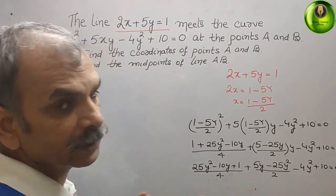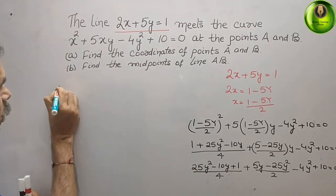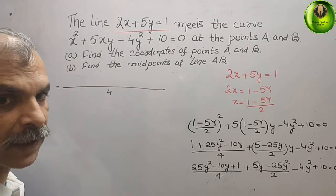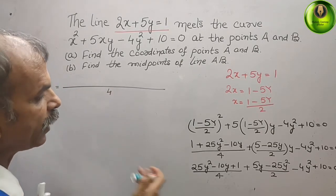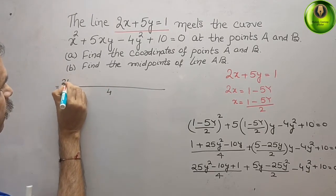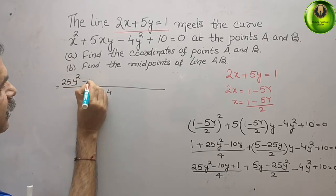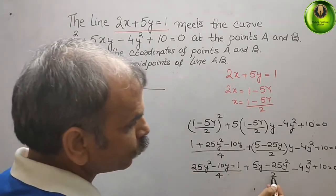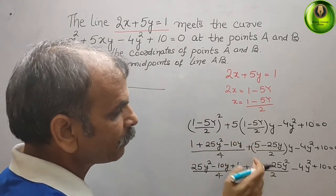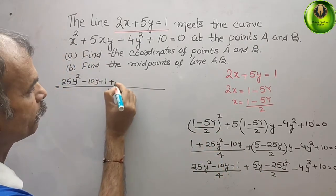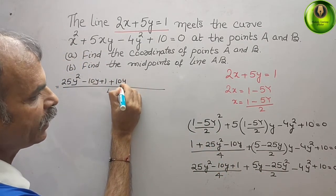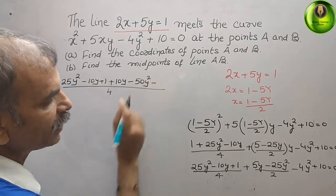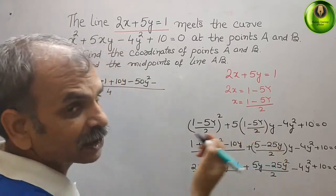Taking LCM as 4, we multiply through. The first group gives 25y² - 10y + 1. The second group is multiplied by 2, giving 10y - 50y². The third gives -16y² and 40.